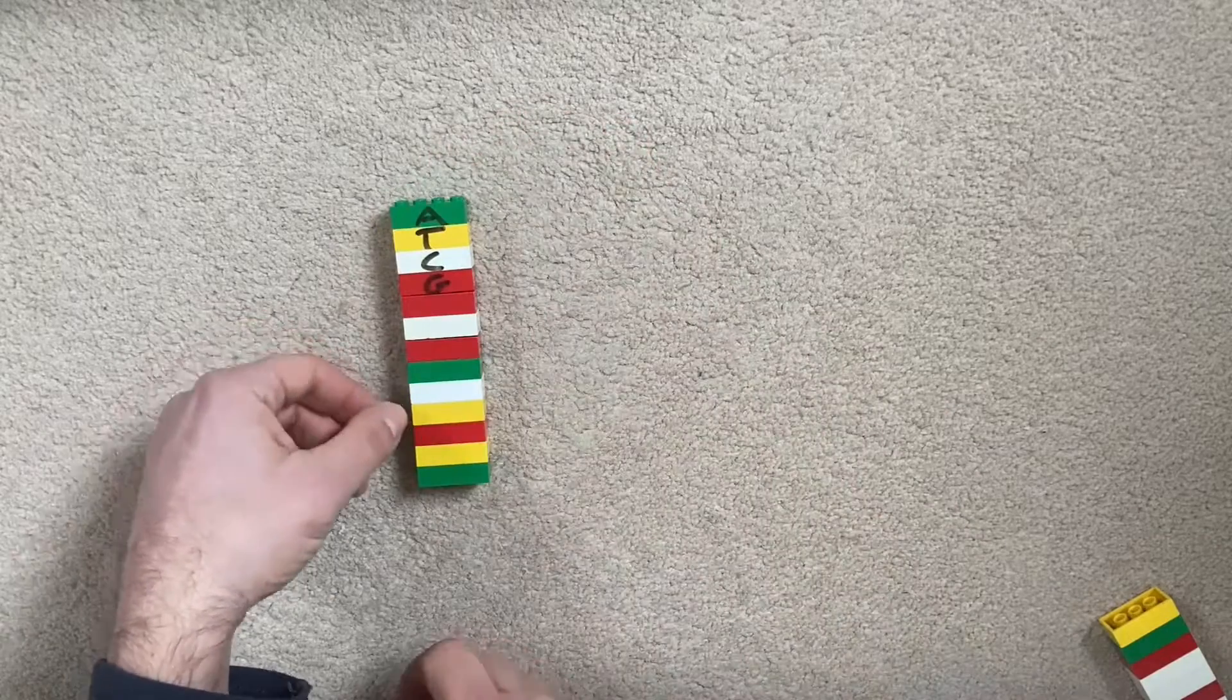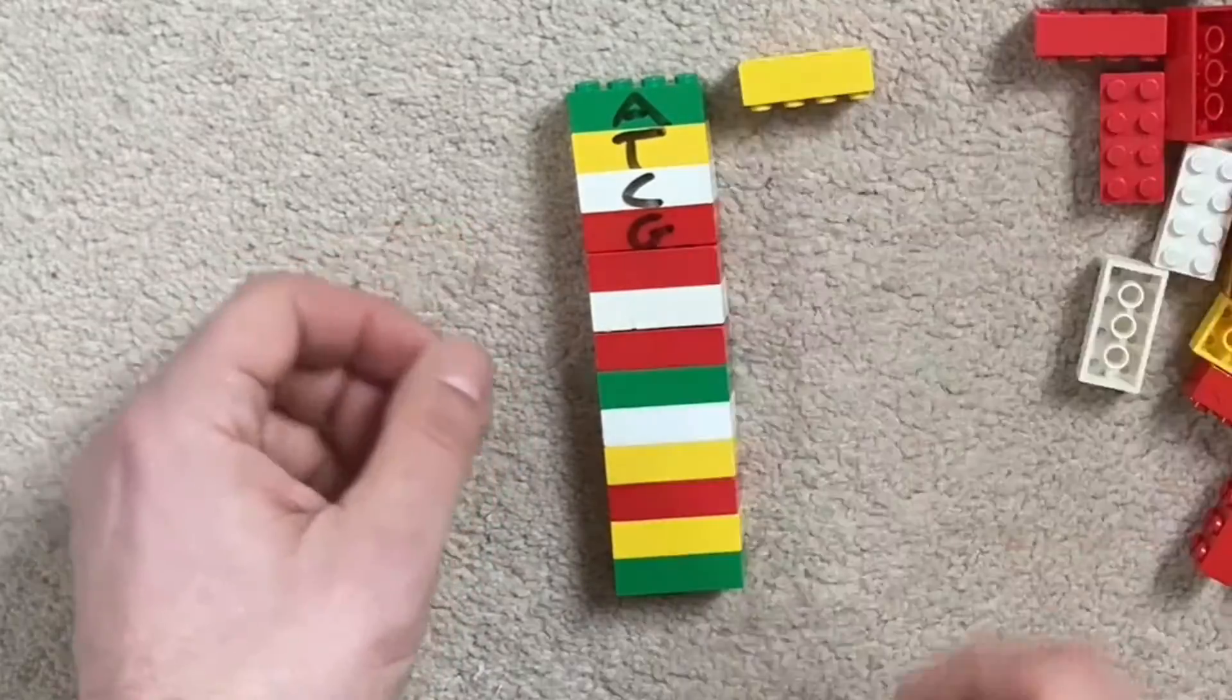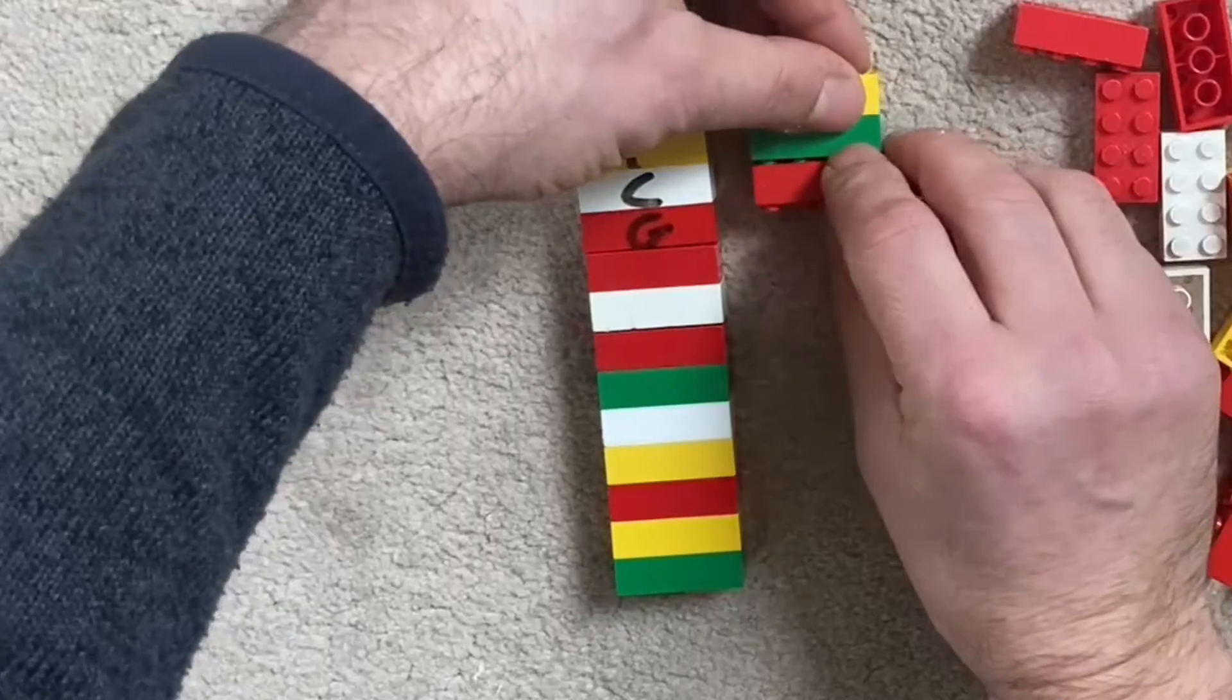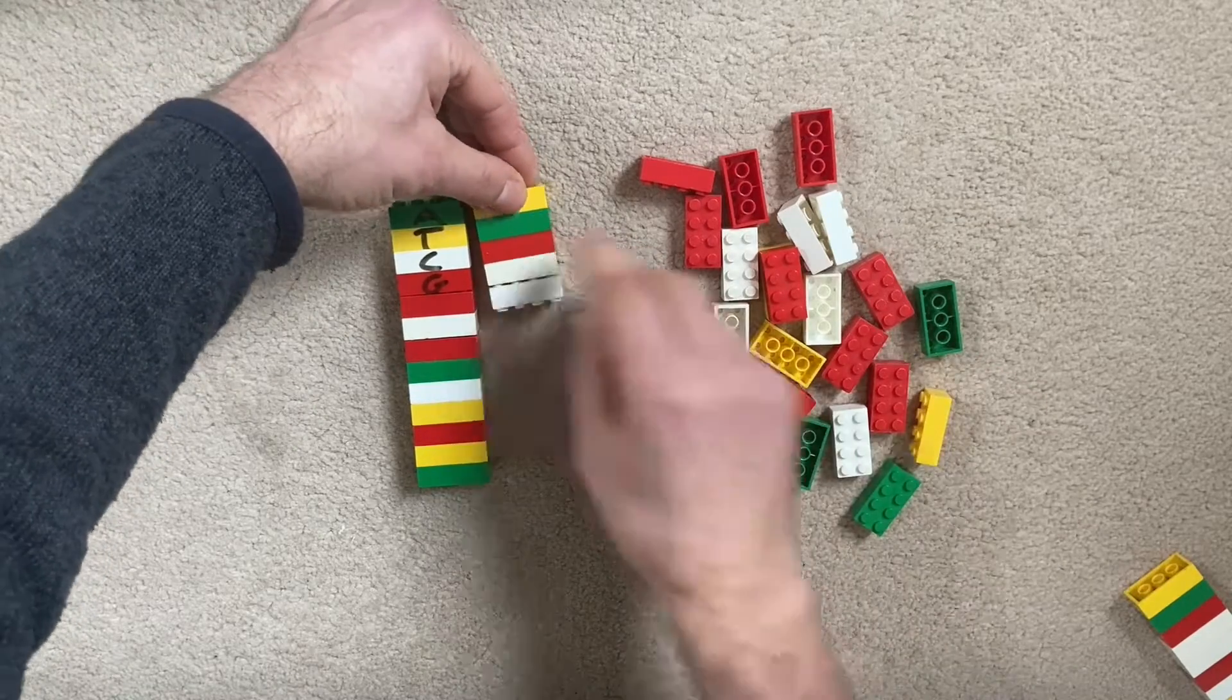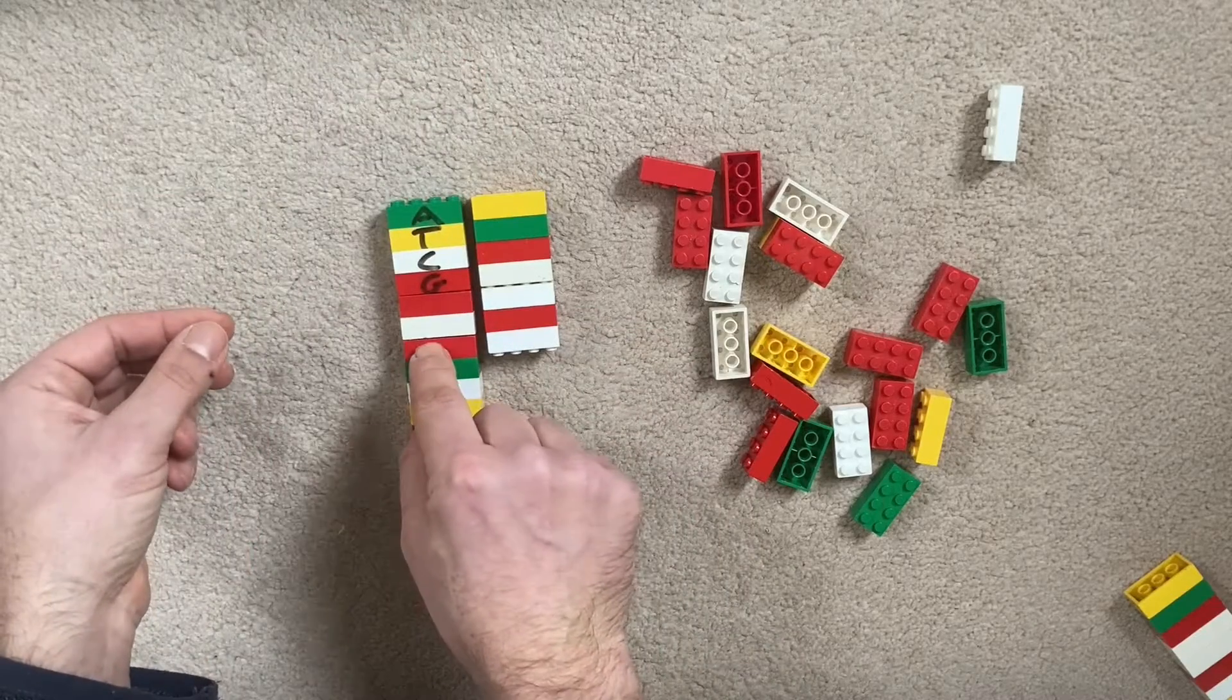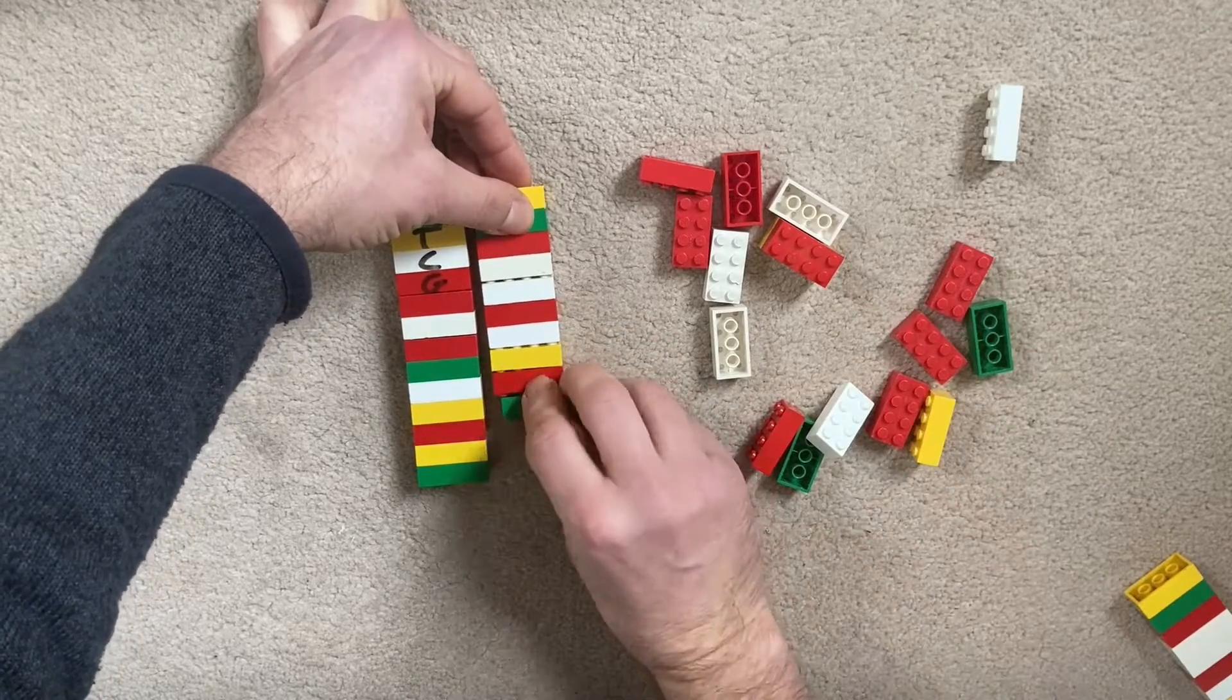We start out with a single strand of DNA and my molecular machinery goes, right, I need a T. It puts one there and it says, right, now I need an A and it grabs one and puts it there. And then it says I need a G and so on, and together we start to replicate a fresh strand of DNA.